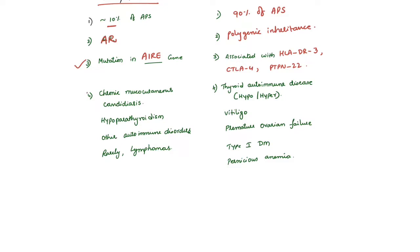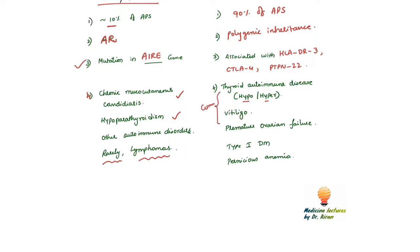APS type 1 is associated with chronic mucocutaneous candidiasis, hypoparathyroidism, and other autoimmune disorders, and it can rarely cause lymphomas. Whereas type 2 is associated with thyroid autoimmune disease — whether hypo or hyperthyroidism — vitiligo, and premature ovarian failure. These are the common associations.